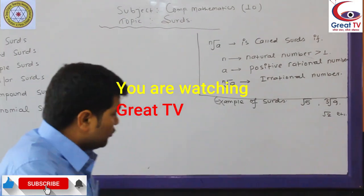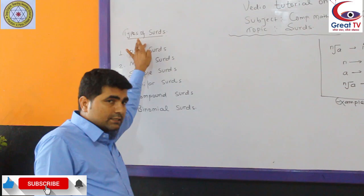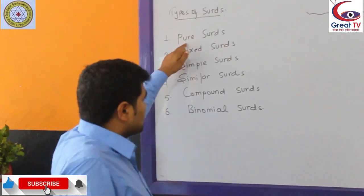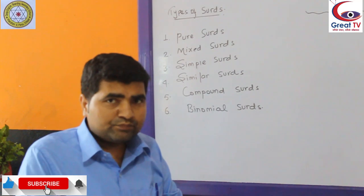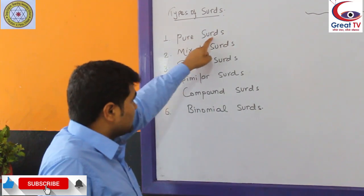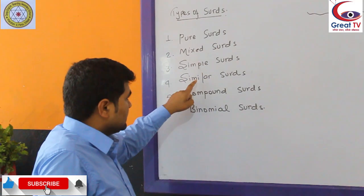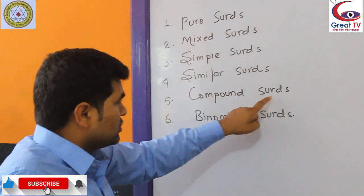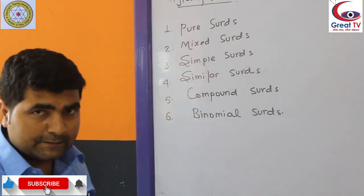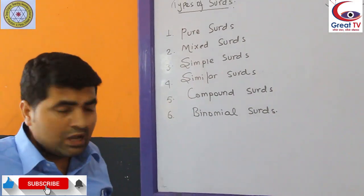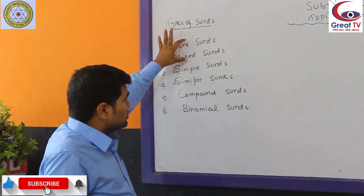Now I am going to teach about the types of surds. There are various types of surds we study in class 9 and class 10: pure surds, mixed surds, simple surds, similar surds, compound surds, and binomial surds. Today I am going to discuss only two of these — the first is pure surds, and the second is mixed surds.